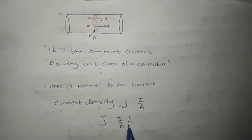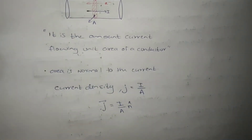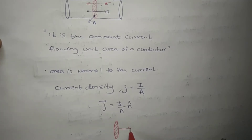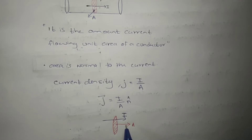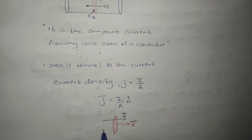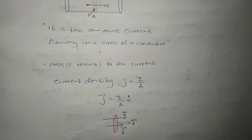What is n̂? n̂ is a unit vector that has the same direction as the cross-section area. Now, taking the cross-section area of the conductor — the area vector is always normal to the conductor. We consider the current direction, which is opposite to the negative charge movement. The area vector is normal to the cross-section and is along the same direction as the current. So the n̂ direction and the J (current density) direction are along the same direction.